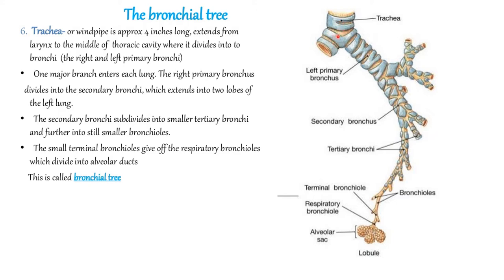The trachea then divides into two, forming the bronchi. The primary bronchus further divides and forms secondary bronchus, then tertiary bronchus. The tertiary bronchus divides and forms bronchioles, which finally divide into terminal bronchioles and end into a sac-like structure known as alveoli. This whole structure is known as the bronchial tree.